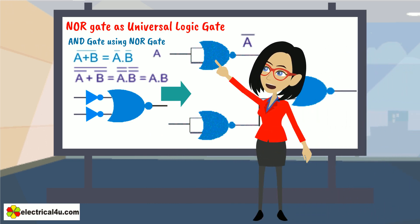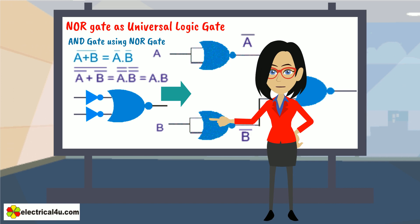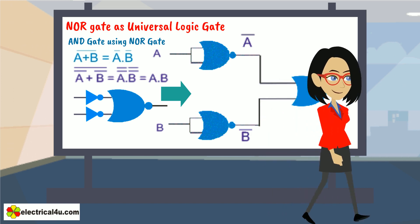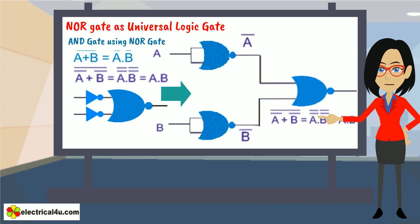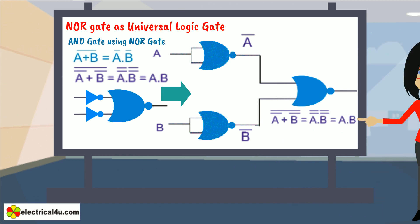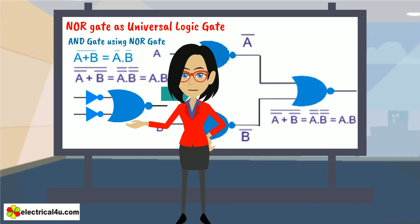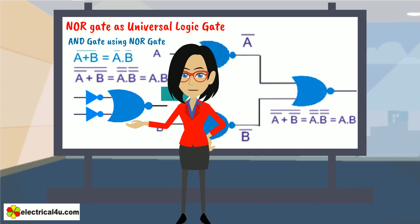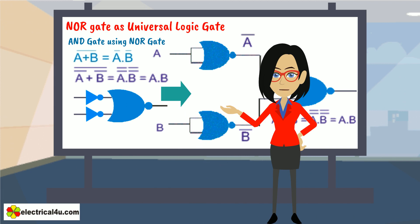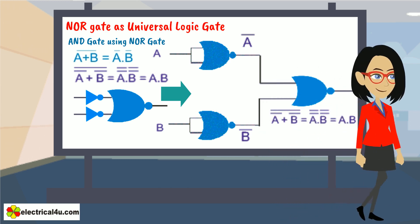Input A is inverted through a NOR gate and becomes ā. Input B is inverted through another NOR gate and becomes b̄. The output of the third NOR gate is the whole bar of (ā + b̄), which equals a · b according to De Morgan's theorem. So if we connect NOR gates at both inputs of a NOR gate, we get an AND gate equivalent. Since we are only allowed to use NOR gates, we use the NOR-realized NOT gates here. The logical equivalent circuit is as shown here.